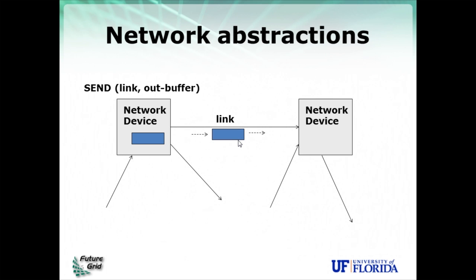The message then goes over a link, which could pass through multiple intermediate devices. For now, let's assume the link connects two devices directly. On the receiving end, there's the abstraction of receiving a message — you specify which link you want to receive from and provide a buffer to copy the incoming message. That's the typical method of communication between any two devices on the network.